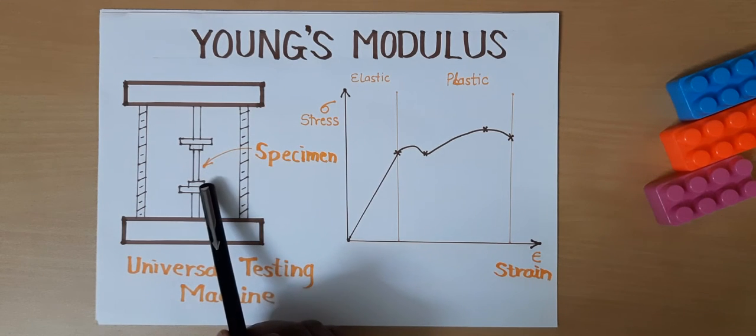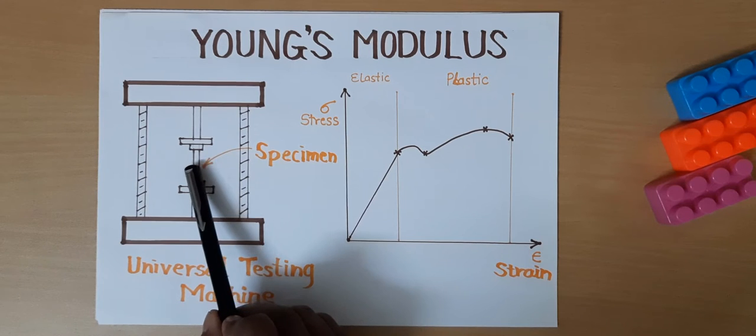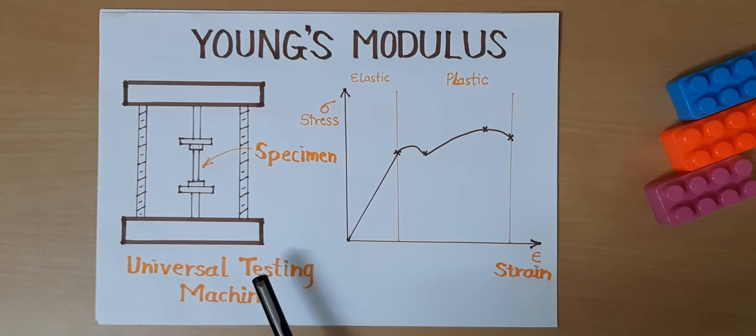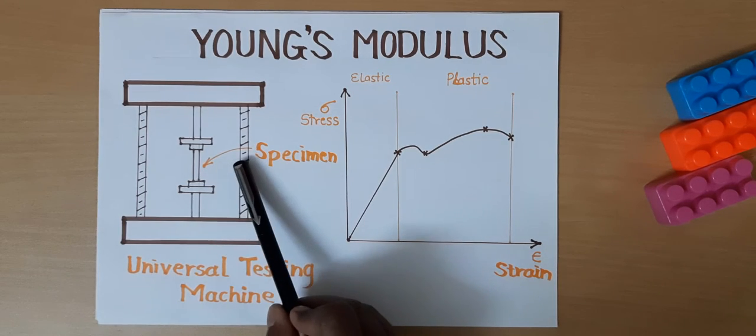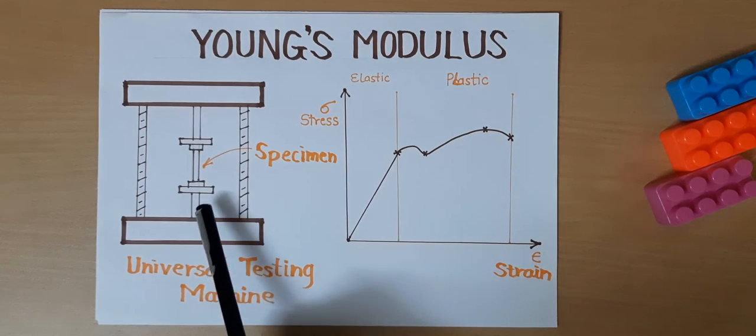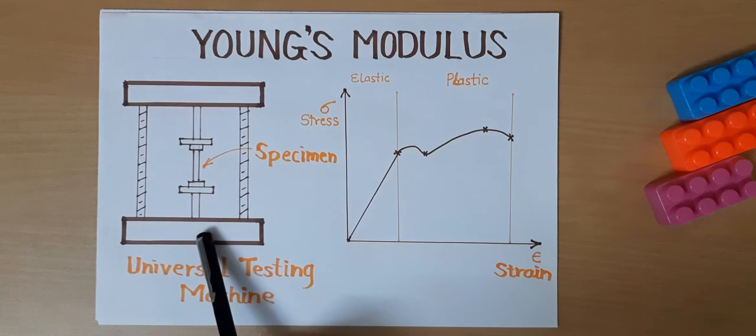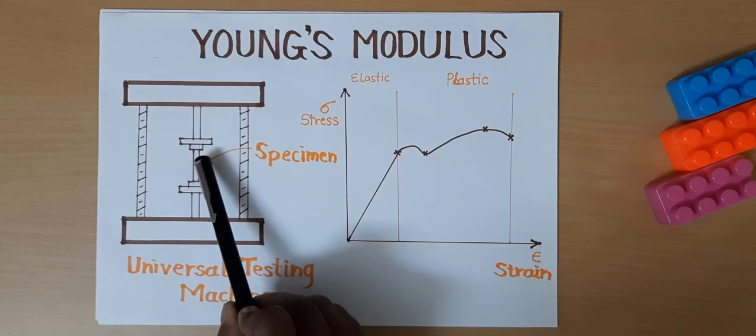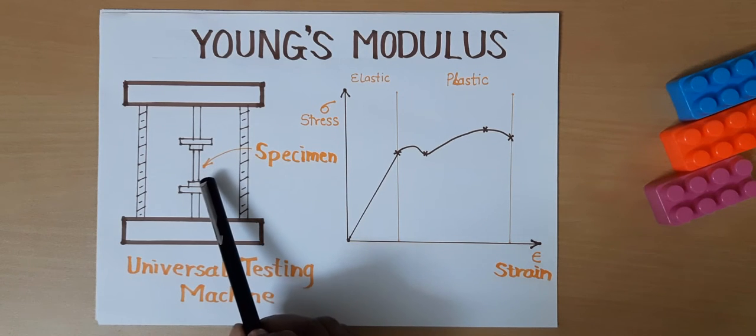Because of that tensile loading, there will be stress generated at the cross section. Due to the stress, there will be strain generation and there is some relation. In this machine, we are measuring how much force is applied per unit time and how much change in length happens to that specimen.